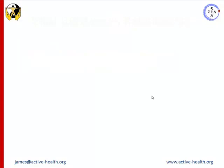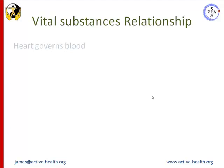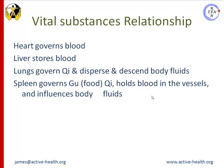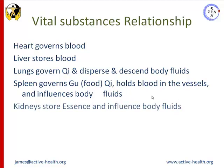When we look at the relationship between the Zang Fu and vital substances, we see clearly that the heart governs the blood. The liver stores the blood and regulates the amount of blood in circulation. The lungs govern qi and disperse and descend body fluids. The spleen governs gu qi, holds blood in the blood vessels and influences body fluids. While the kidneys store essence and influence body fluids.